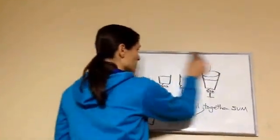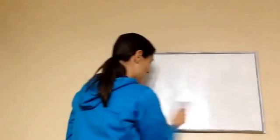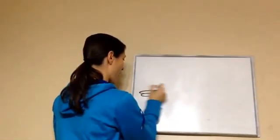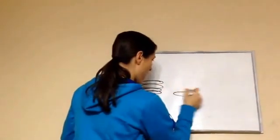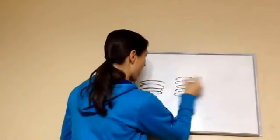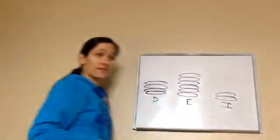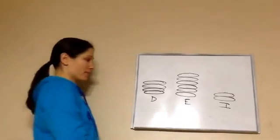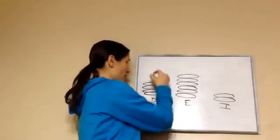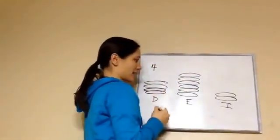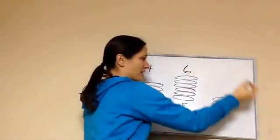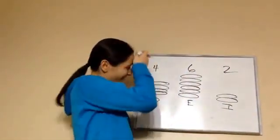Now, pancakes is another one I did last year. All right. Daddy, Eli, Isaac. You're going to help me figure this one out. Daddy has four pancakes. Eli has six, and Isaac has two. Now, it doesn't seem very fair, does it? No.